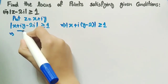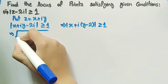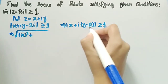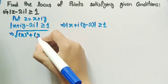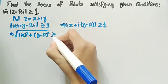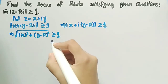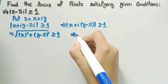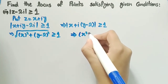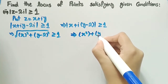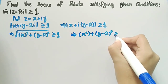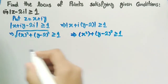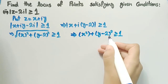we get square root of x squared plus the square of the imaginary part which is y minus 2 squared, greater than or equal to 1. Now squaring both sides of this equation we get x squared plus y minus 2 whole squared greater than or equal to 1. We can see that this equation resembles the equation of a circle.